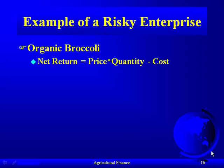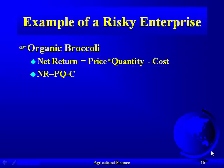If we look at evaluating this enterprise, let's keep it simple. We'll say the net return to this broccoli enterprise that we plan on growing is the price times the quantity that we grow minus any cost. That's our net returns. In notation, net returns equals price times quantity minus cost: PQ minus C.